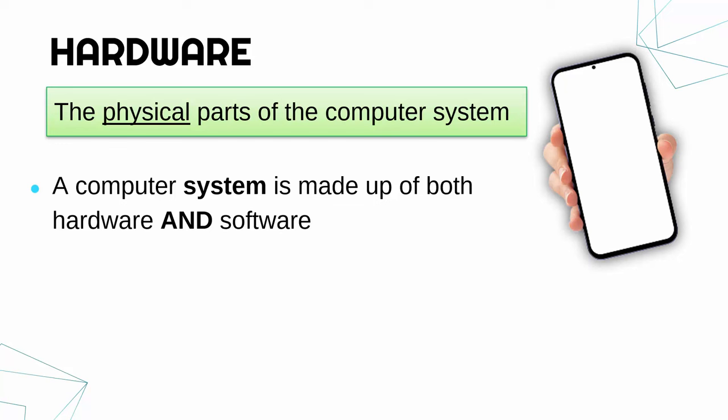So the computer as a physical thing is hardware, but the actual system has both hardware and software. Software — we'll talk more in future videos — but software are the instructions running on the hardware. You need to have hardware to run software.